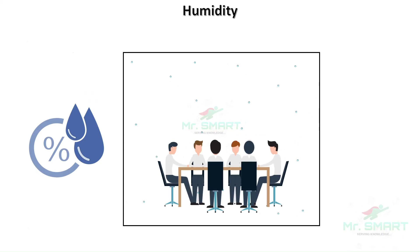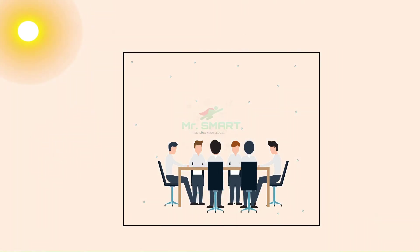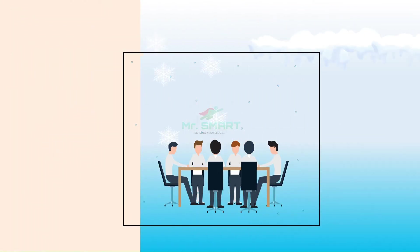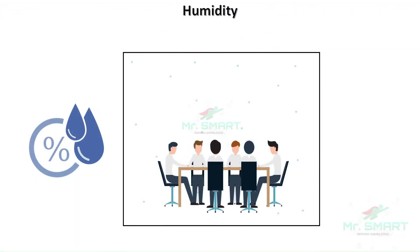What does humidity mean? Humidity is the measure of moisture content present in the air. It is often referred to as relative humidity, or RH, and is usually expressed in percentage. Whether it is hot summer or cold winter, maintaining humidity inside the space is just as important as maintaining temperature. Generally, humidity is maintained between 50% to 60% in order to have a better-ventilated space.